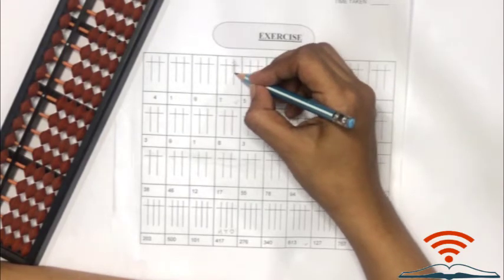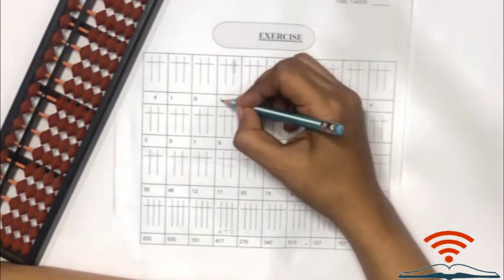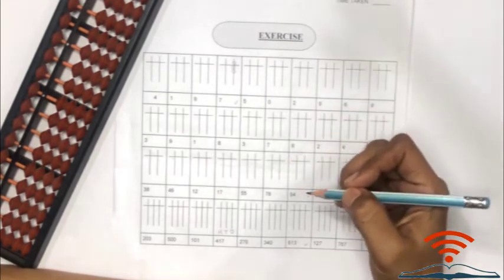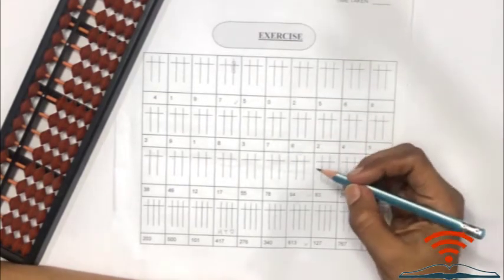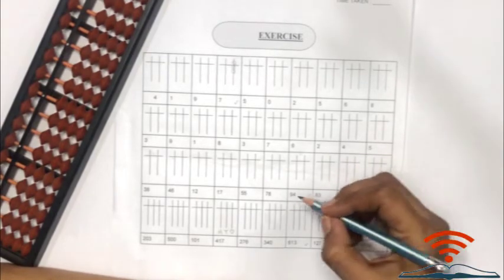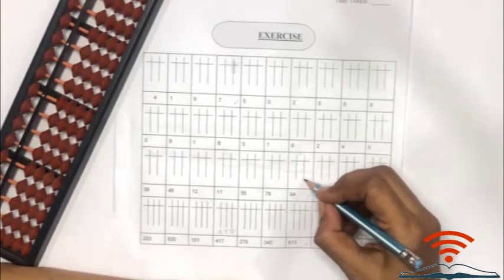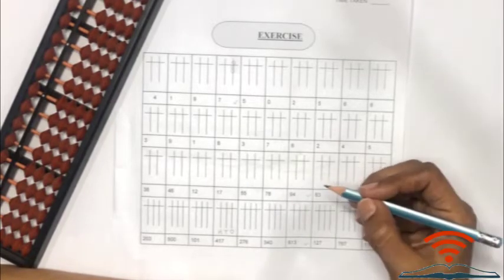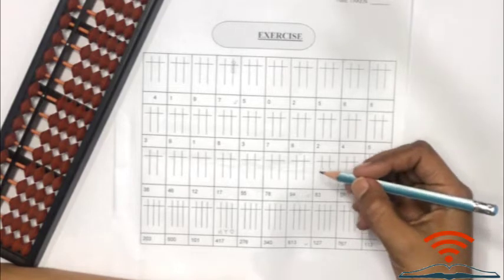Let's practice one more. Here is number 94. Four belongs to the ones family and nine belongs to the tens family. We will put beads accordingly.